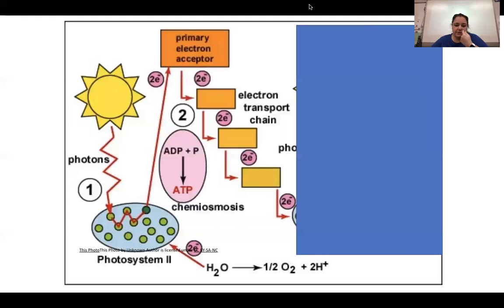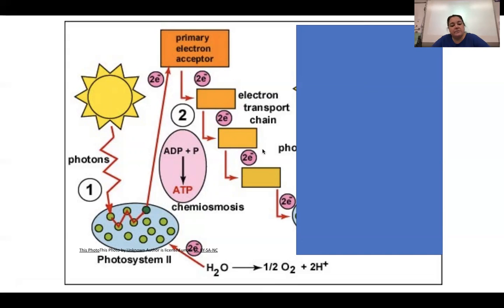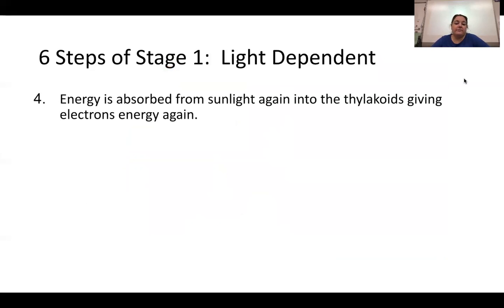To summarize that visually: photons of light hit the chloroplast's thylakoids, splitting water into oxygen, protons, and electrons. The electrons reach a higher energy state, travel down the electron transport chain, and protons moving through ATP synthase produce ATP. Step four: the low-energy electrons then absorb sunlight a second time, gaining energy again.